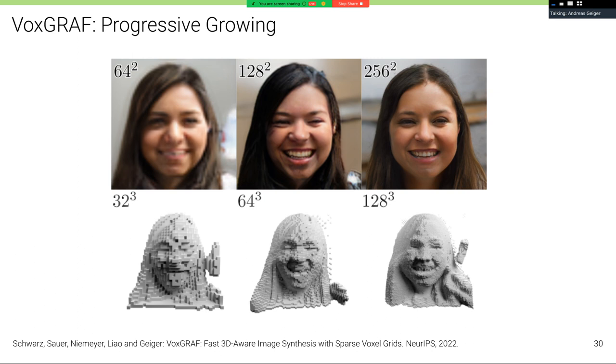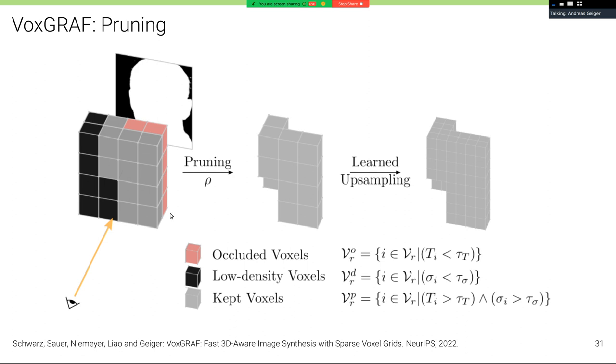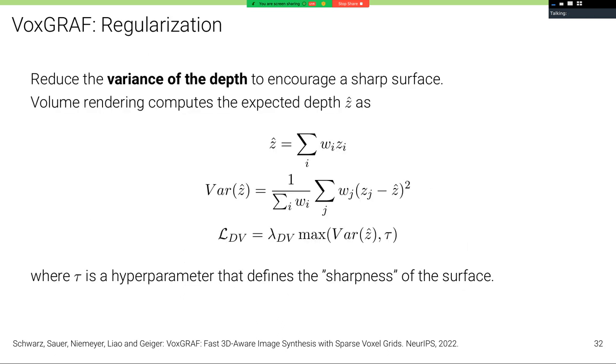We also use progressive growing as in the previous project to consecutively attain higher and higher resolutions. What we do here when we go from a lower to a higher resolution is that we prune voxels to yield a sparse representation. So for example, the red voxels here are occluded, so we prune them. And also the black voxels here we prune because we have low density and the likelihood of contributing to the color value, the rendered color value, is small. So we prune them away. To help pruning, we also add an additional loss function to make the representation more sparse than it would be, to induce this additional inductive bias here. And what we do is we reduce the variance of the depth. We volume render the expected depth c-hat, and then we compute the variance of c-hat, which is of course differentiable. And then we optimize a loss that is based on the variance and has some additional margin tau here. So this defines basically the sharpness of the surface.